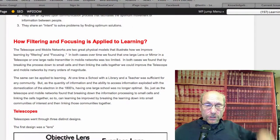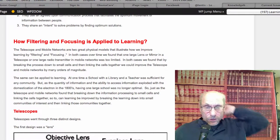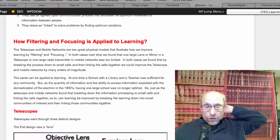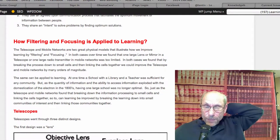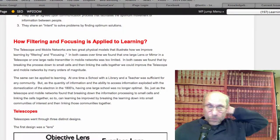So just as the telescope and mobile networks found that breaking down the information processing to small cells and linking the cells together, so too can learning be improved by breaking the learning down into small communities of interest and then linking those communities together.